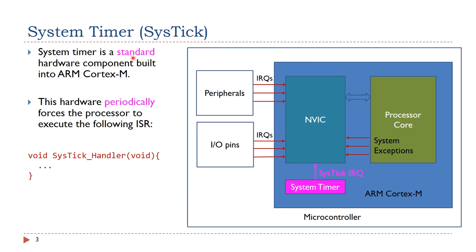The system timer is a standard hardware component built into ARM Cortex processors. Almost all ARM Cortex processors have the system timer component. If enabled, the system timer can periodically generate SysTick interrupt requests. The Nested Vectored Interrupt Controller, NVIC, monitors and handles all interrupt requests based on their priority levels. For SysTick interrupts, NVIC forces the core to execute the interrupt service routine.